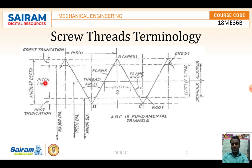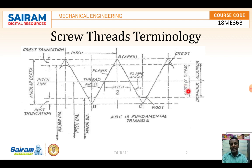Simply put — the pitch line to the crest, whatever area is placed above, that is called the addendum. From the pitch line to the bottom, up to the root, whatever area is placed, that is called the dedendum. So addendum is from the pitch line upward to the crest, and dedendum is from the pitch line downward to the root.